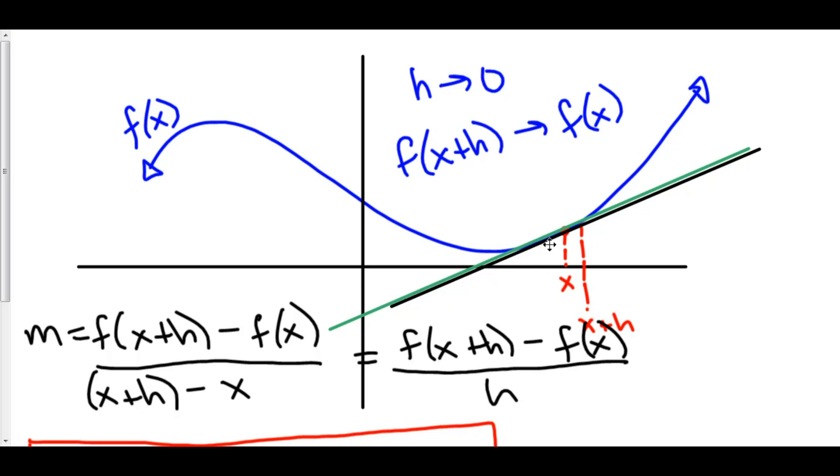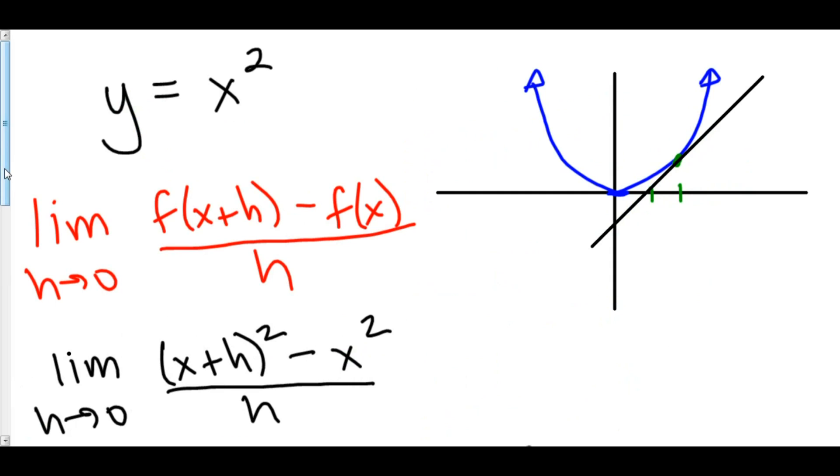Approaching zero, in fact. So, as my change in y approaches zero, we call that an infinite sliver of y. And that's what dy means. It's an infinite sliver of y. And my x, as my change in x approaches zero, that's going to be an infinite sliver of x. And that is what dy over dx means.